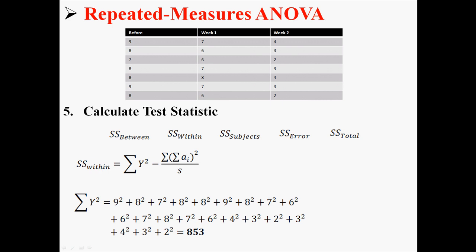We take every individual value we have, square them, and then add them together. So our sum of y squared is 853. And we just put that in there. Now the second part of the equation, we already found it when we were calculating sum of squares between. So I'm just going to put that there. And now we can find sum of squares within, which is 10.29.